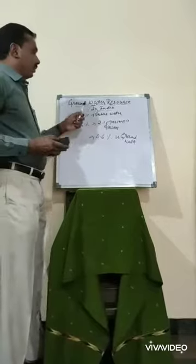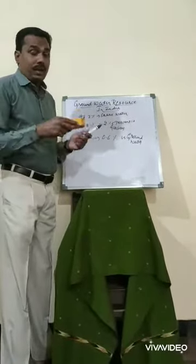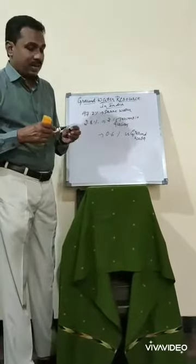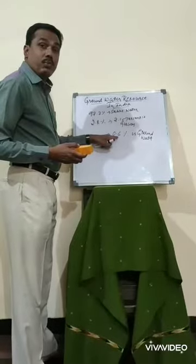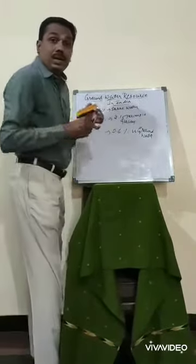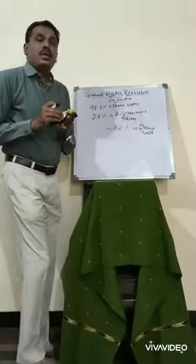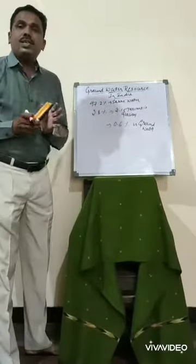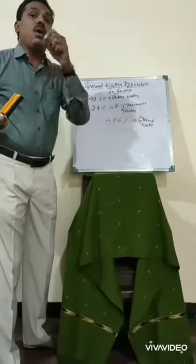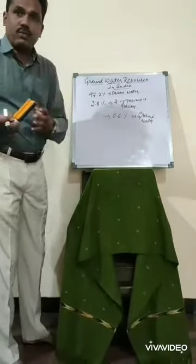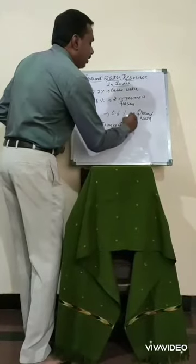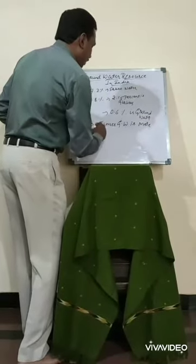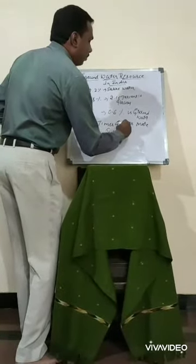In the earlier class I was explaining about the water source in India, that is surface water. Groundwater, which is 0.6%, means that apart from ocean water — whether it is ponds, lakes, streams, or reservoirs — groundwater is 30 times more than surface water.